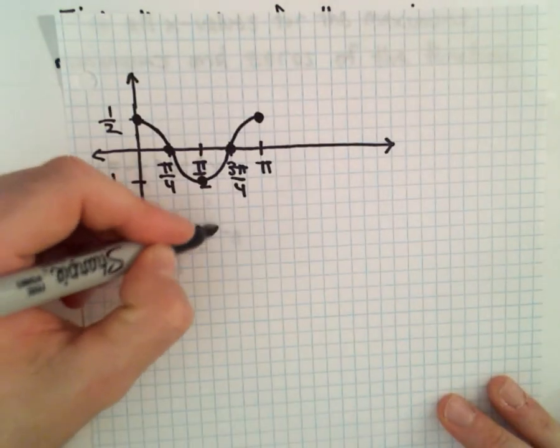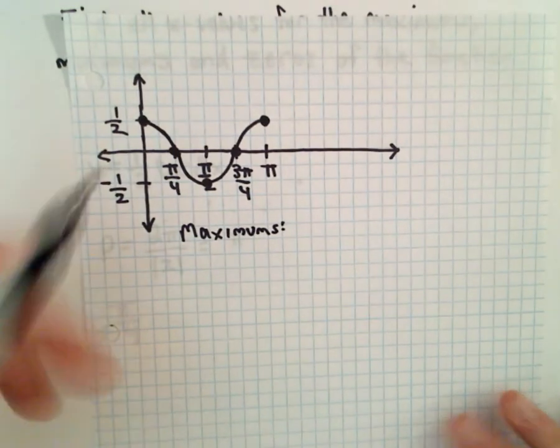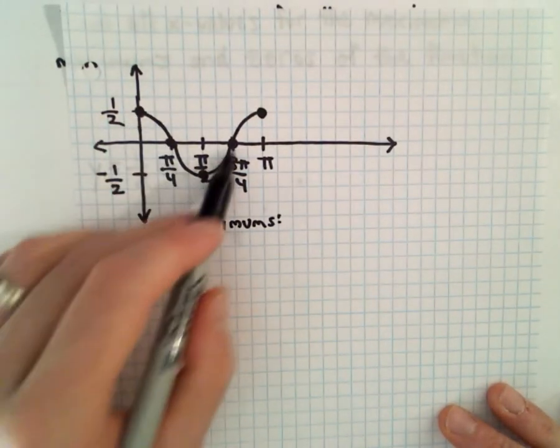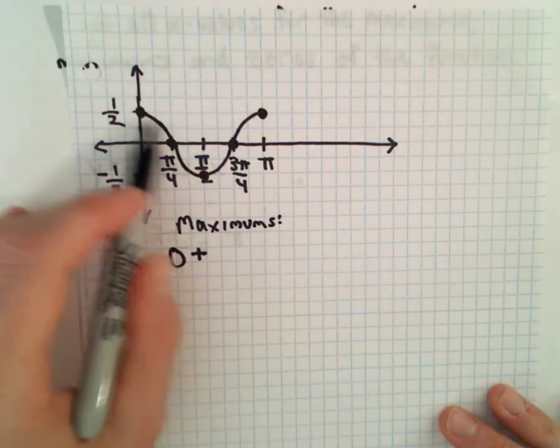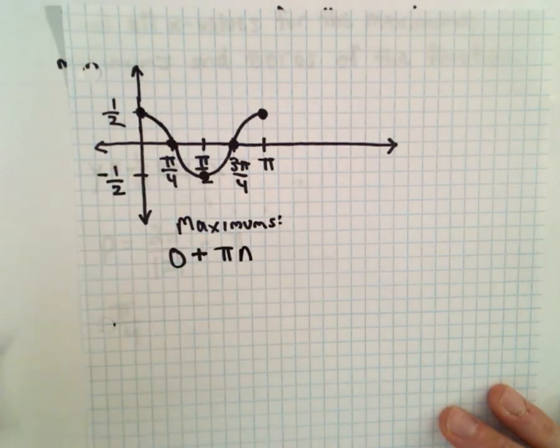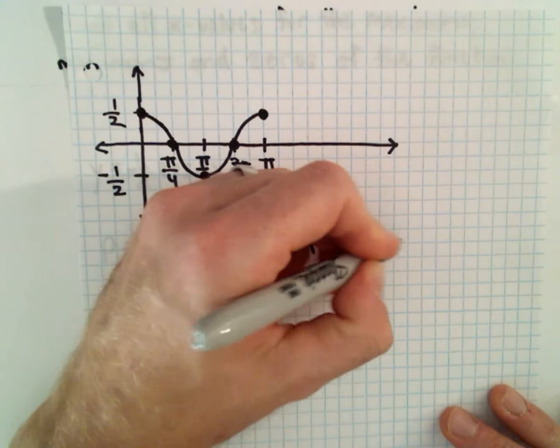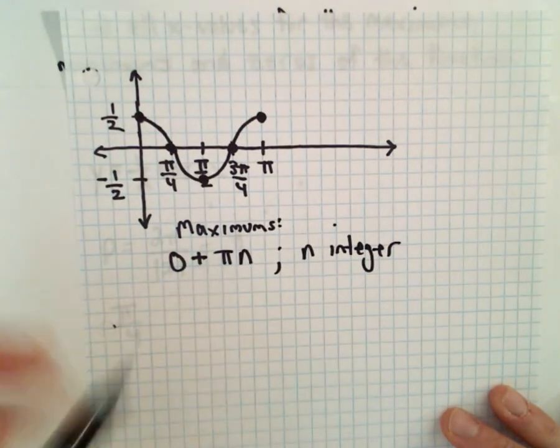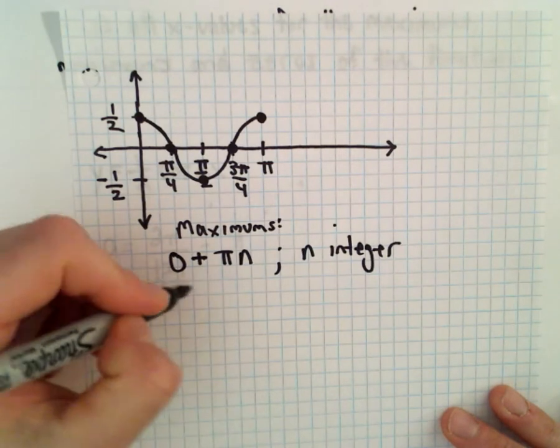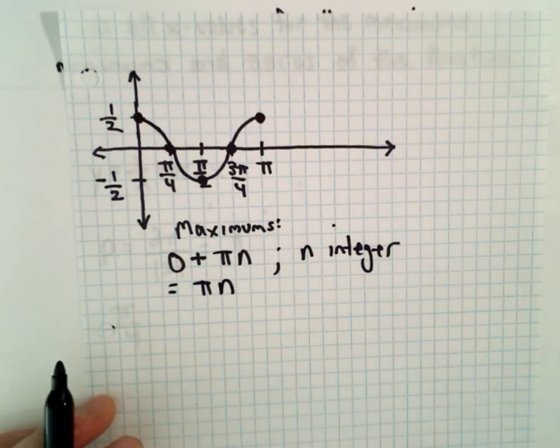To get the maximums, the first maximum occurs at x = 0. To get back to another maximum, we'll just have to go the distance of one period, which is π. And we multiply that by n, where n is an integer. So the maximums will occur at πn, where n is an integer.